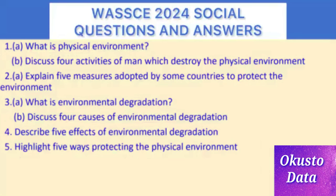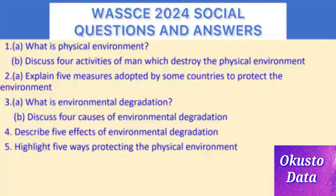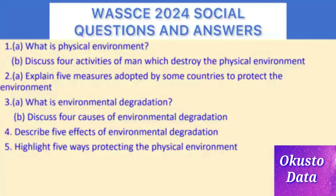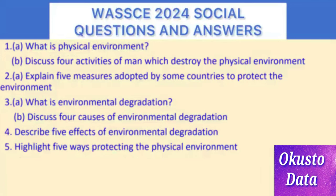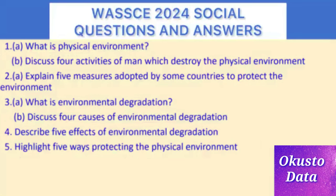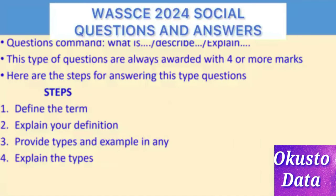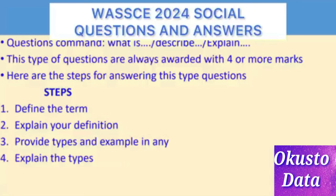Question 1: (a) What is the physical/fiscal environment? (b) Discuss four activities of man which destroy the physical environment. Question 2: Explain five measures adopted by some countries to protect the environment. Question 3: (a) What is environmental degradation? (b) Discuss four causes of environmental degradation. Question 4: Describe five effects of environmental degradation. Question 5: Highlight five ways of protecting the environment.